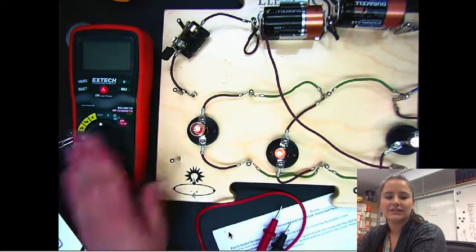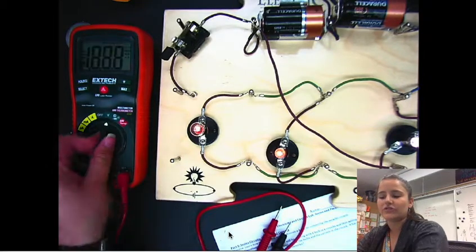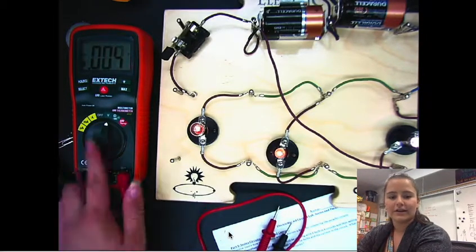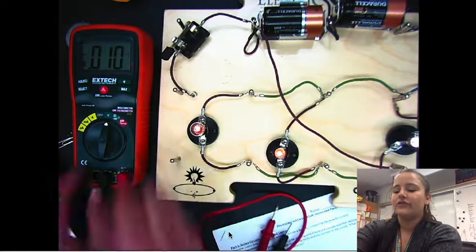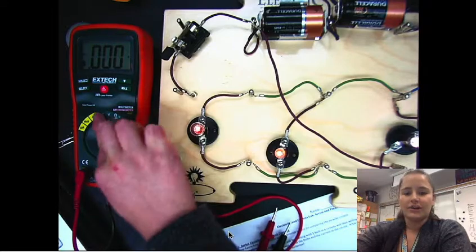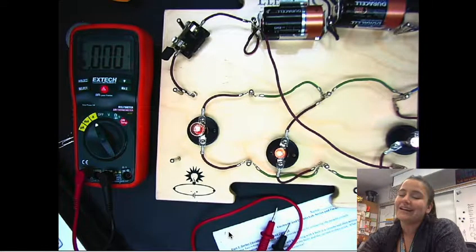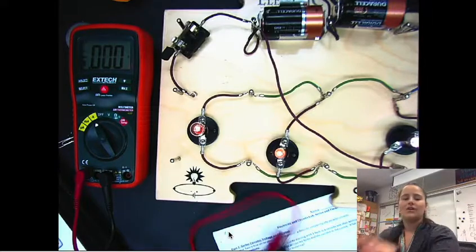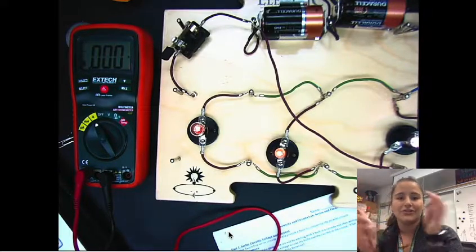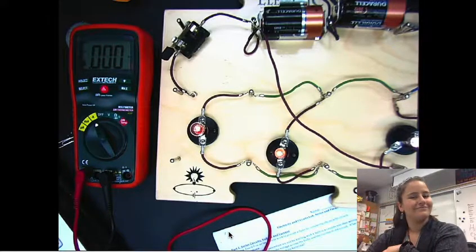And remember to be changing settings of your multimeter. Make sure it's always in DC. If you're measuring voltage, you want it on volts. If you're measuring current, you want it on current and DC. If you get a negative number, just take the position of your leads and switch them around. Okay, cool.